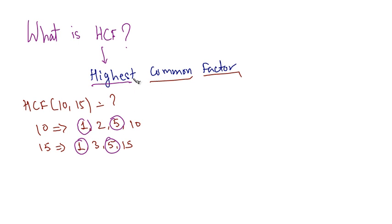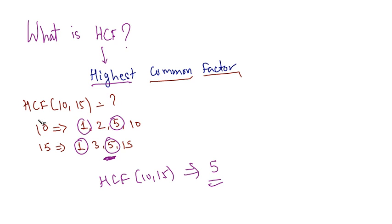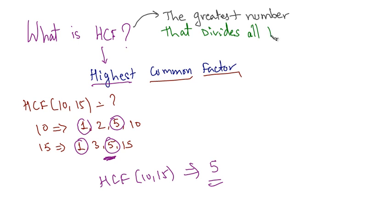The next word is 'highest'. So what amongst these common factors is the highest factor? 5 is the highest factor, so HCF of 10 and 15 turns out to be 5. We have just calculated the factors of the given numbers and found out the common factors between them. The HCF or GCD is the highest of these common factors. And by definition, the highest common factor is the greatest number that divides all the given numbers.